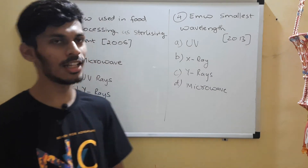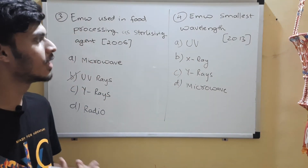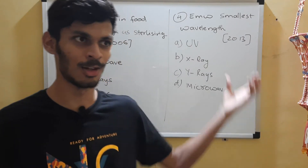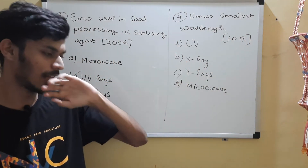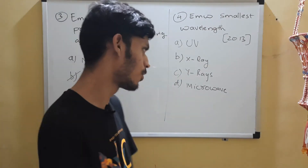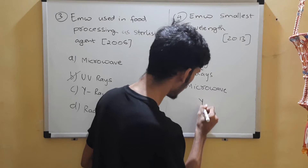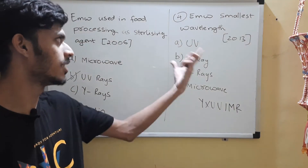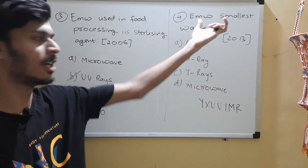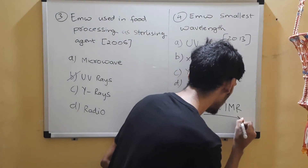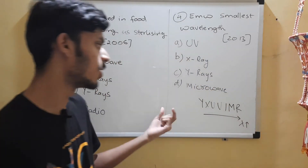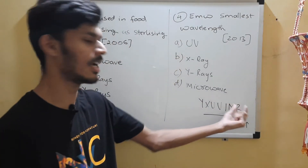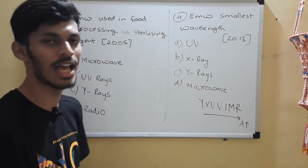Question 4 is from 2013: which electromagnetic wave has the smallest wavelength? A useful mnemonic is gamma-X-U-V-I-M-R (Grand XUV In My Resort). In going from left to right, wavelength increases — so radio waves have the highest wavelength and gamma waves have the lowest. Frequency is the opposite: gamma has the highest frequency and radio has the lowest. The correct answer is option C: gamma rays have the smallest wavelength.